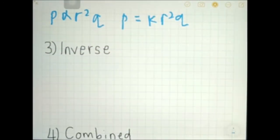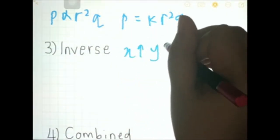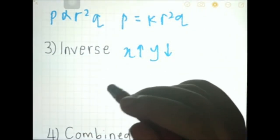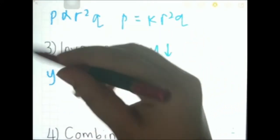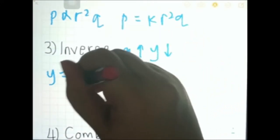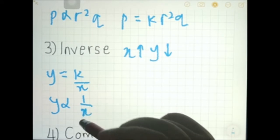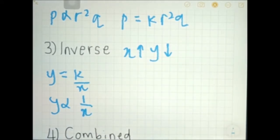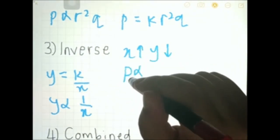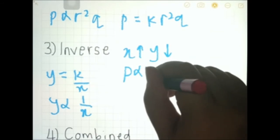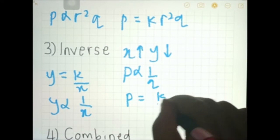Thirdly, inverse variation is when x increases, y will decrease. In equation form, we write it as y equals k over x. So y varies inversely with x. What if p varies inversely with q? In equation form, we write it as p equals k over q.